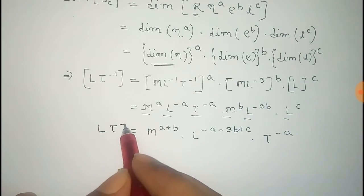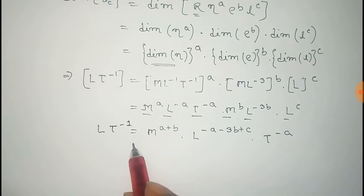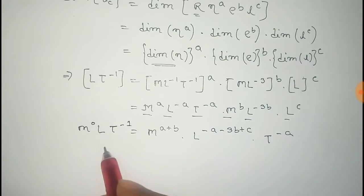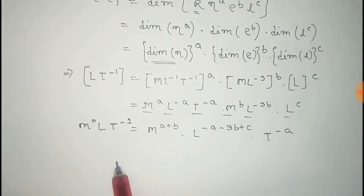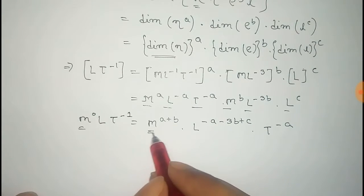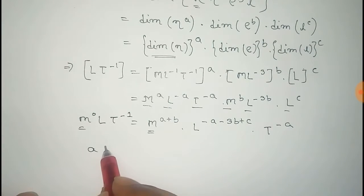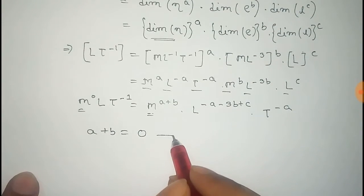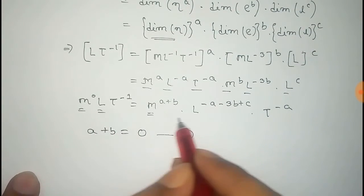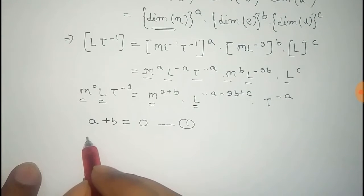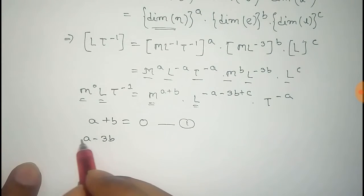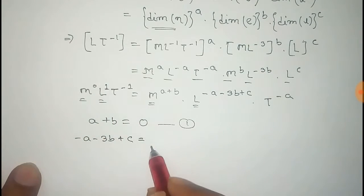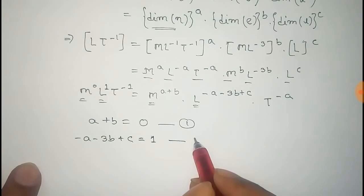Now we compare with the left-hand side. Taking M to the power 0 on the left-hand side, we compare the power of M: a plus b equals 0 — that is equation number 1. Comparing the power of L: minus a minus 3b plus c equals 1 — that is equation number 2.